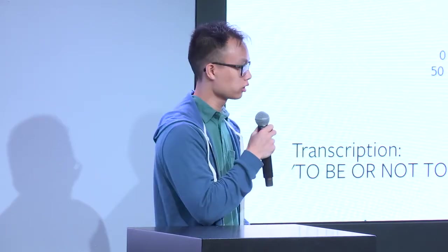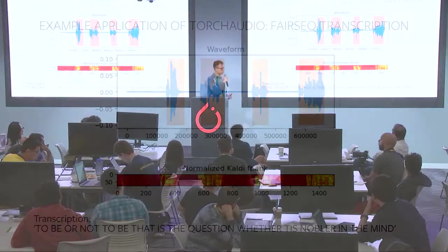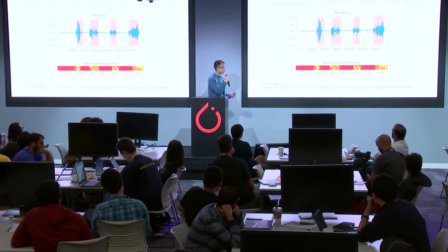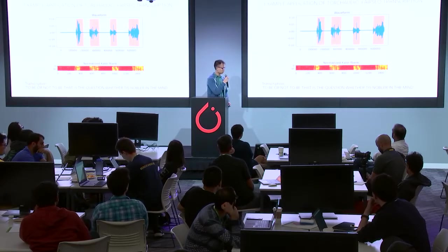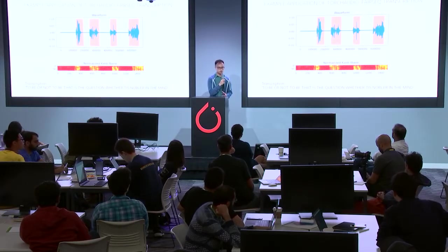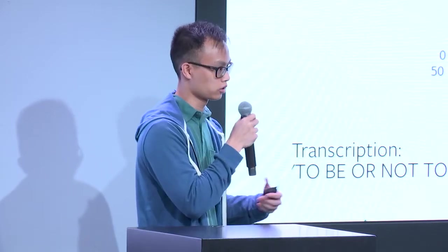A practical application of TorchAudio: we took Shakespeare's Hamlet — "to be or not to be" — took the audio file, and did voice activity detection to segment the file based on when the person is speaking. We ran it through the Kaldi FBank and got the tensor shown below. Using this normalized FBank, we can transcribe the audio. There's also a live demo at our booth where a person reads into the microphone and we transcribe it in real time.